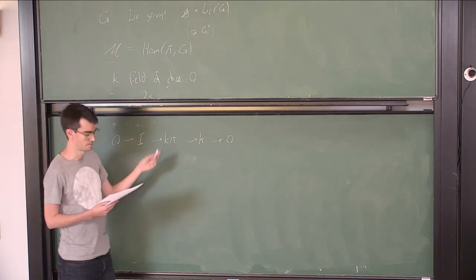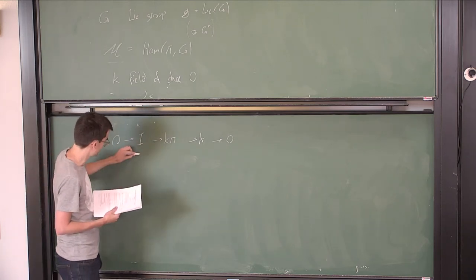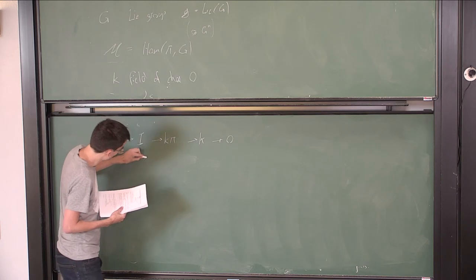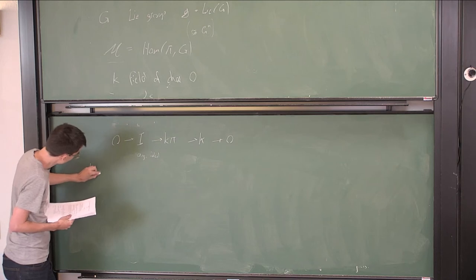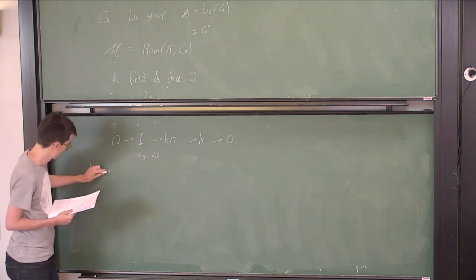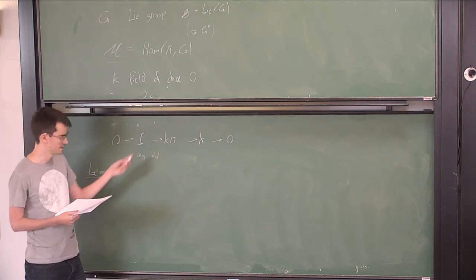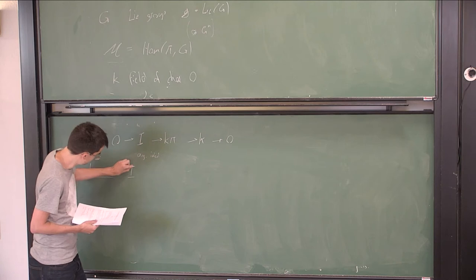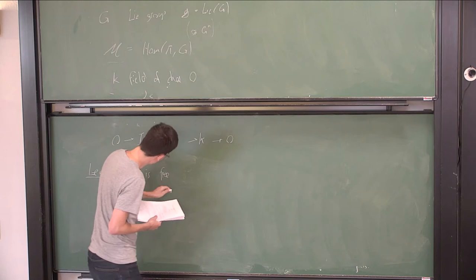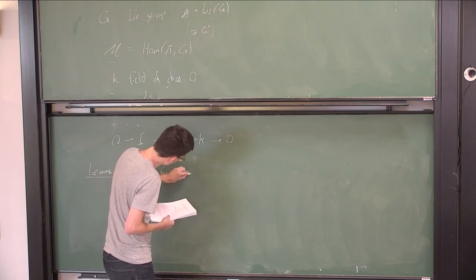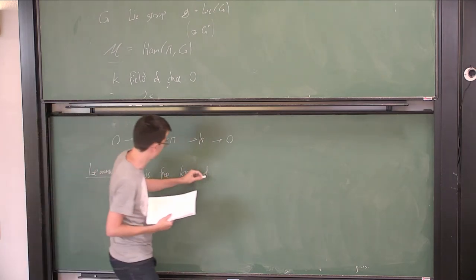So having a free group, we can produce the group algebra and look at the following short exact sequence. So I is just the augmentation ideal. So that's the sequence in π representations. So the first thing that we will need is that this is again free, the K-π module, so again free of rank n.